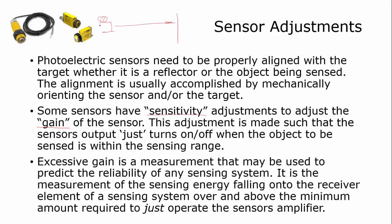Excessive gain is also a measurement that may be used to predict the reliability of a sensing system. It's a measurement of the sensing energy falling onto the receiving element over and above the minimum amount required to just operate the sensor's amplifier. Some sensors will have an adjustment or at least an indicator light to let you know that you have excessive gain.